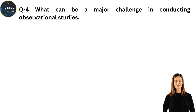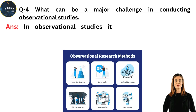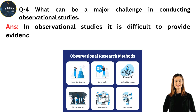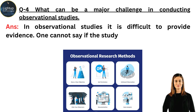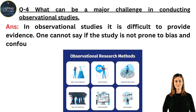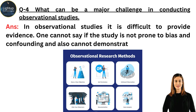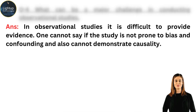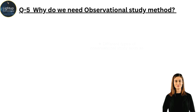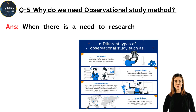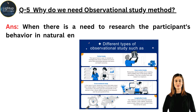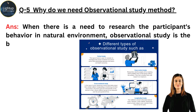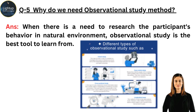What can be a major challenge in conducting observational studies? In observational studies, it is difficult to provide evidence. One cannot say if the study is not prone to bias and confounding, and also cannot demonstrate causality. Why do we need the observational study method? When there is a need to research the participant's behavior in a natural environment, observational study is the best tool to learn from.